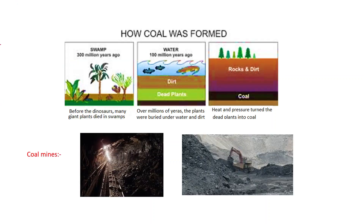With the help of a diagram, you can see how coal was formed. Before dinosaurs, many giant plants died in the swamp — a wetland. Over millions of years, the plants were buried under water and dirt, and heat and pressure turned the dead plants into coal. Presently, coal is obtained by mining, as shown in the mining diagrams.